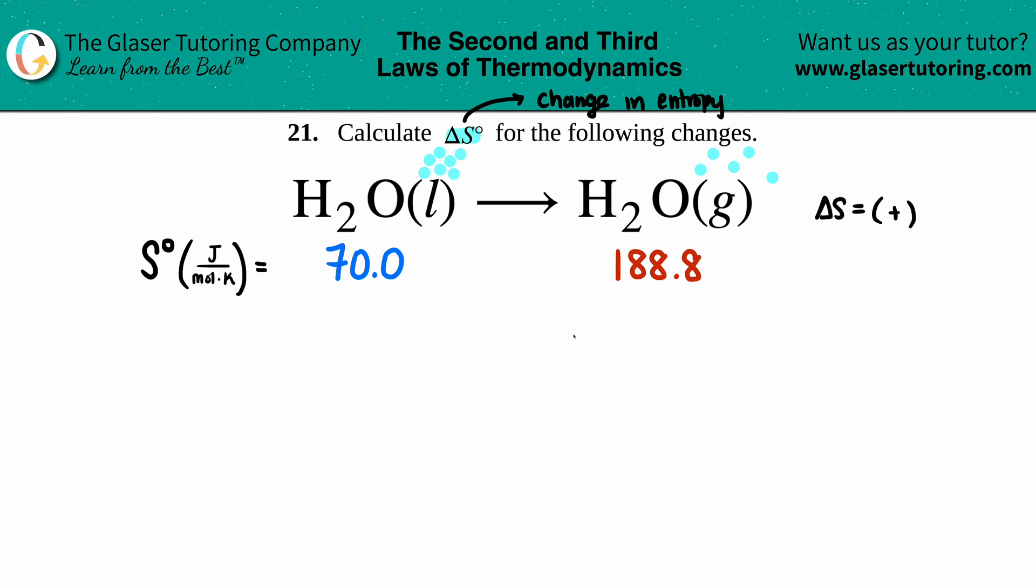How are we going to use those numbers to find out the actual answer? Well, the equation is this: your delta S for your whole entire reaction is the sum—that's this little squiggly line, so the sum, aka addition—you're going to add up all your delta S's of your products and subtract it from your delta S, the sum of all the reactants.